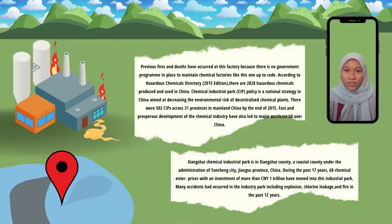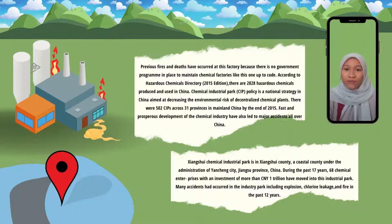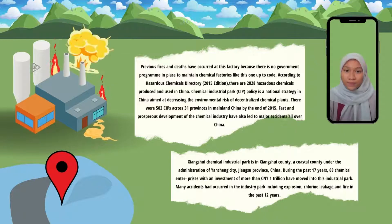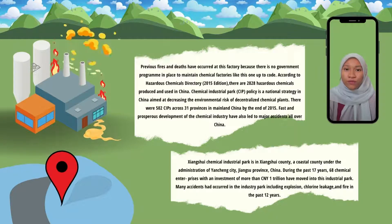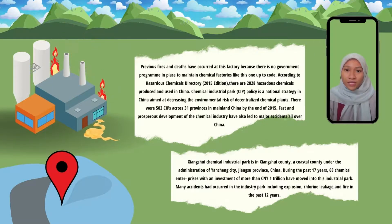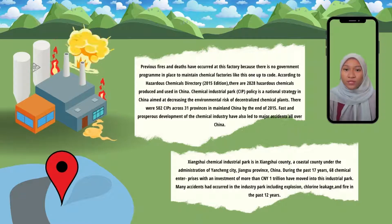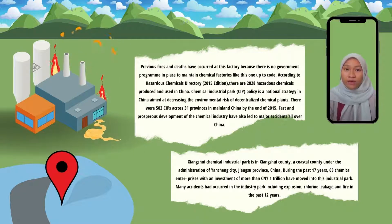Chemical Industry Parks are a national strategy in China that aim at decreasing the environmental risk of decentralized chemical plants. There were 502 such parks across 31 provinces in mainland China by the end of 2015. The fast and prosperous development of the chemical industry has also led to major incidents all over China.